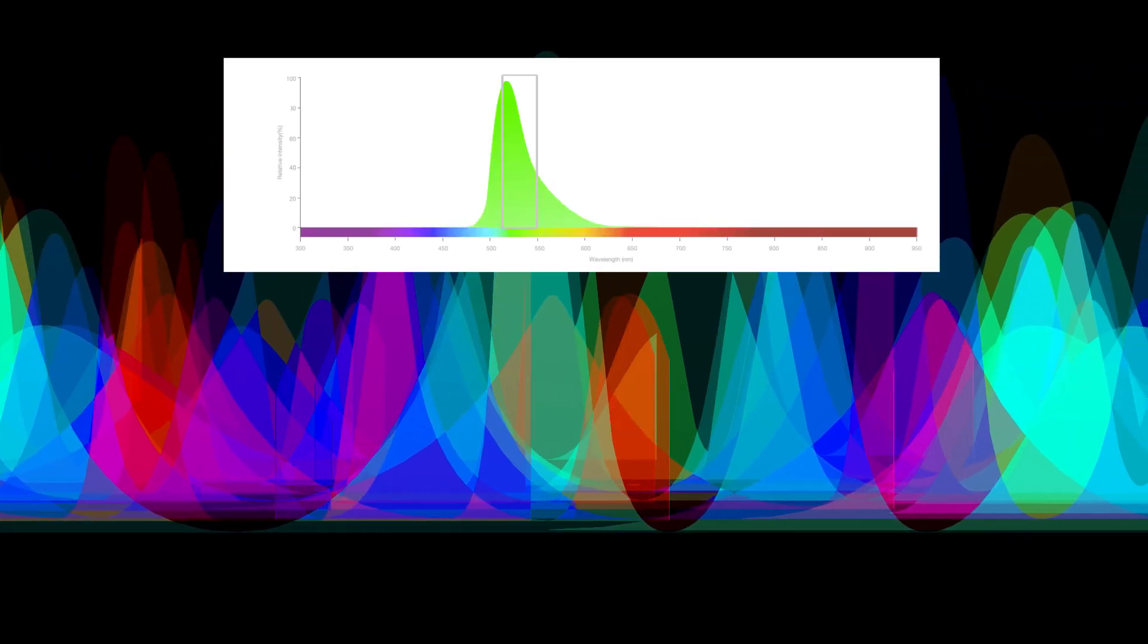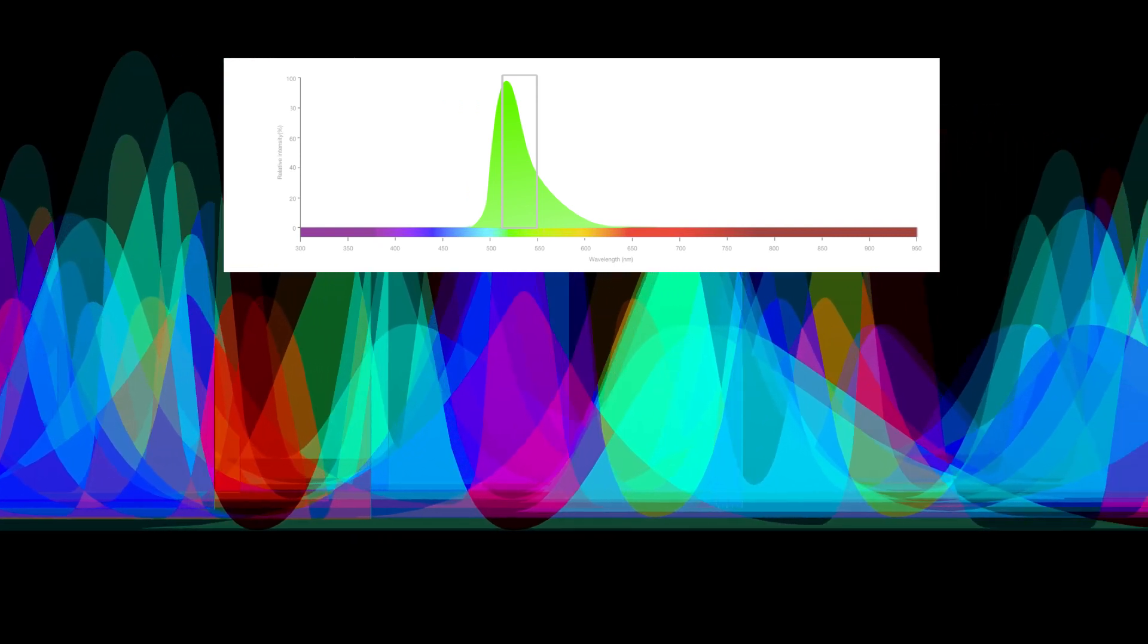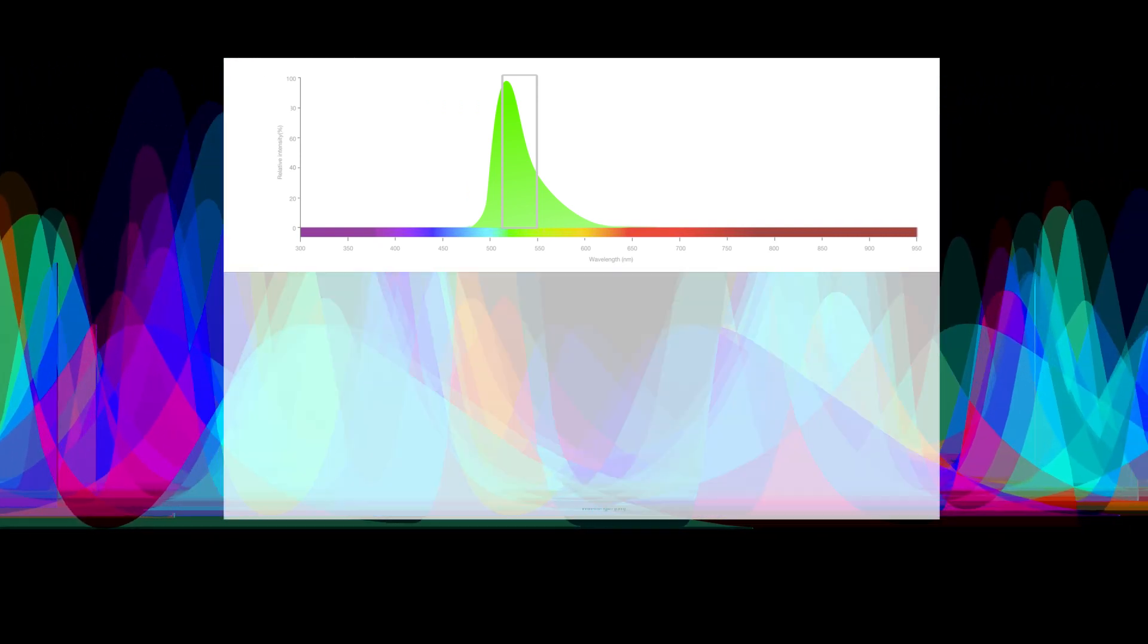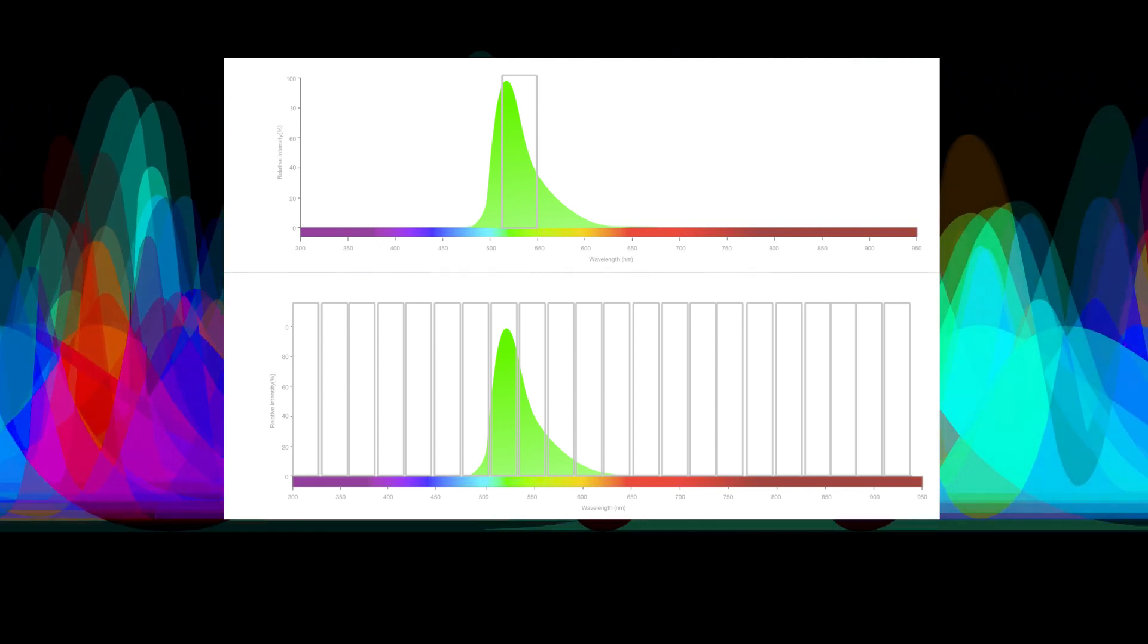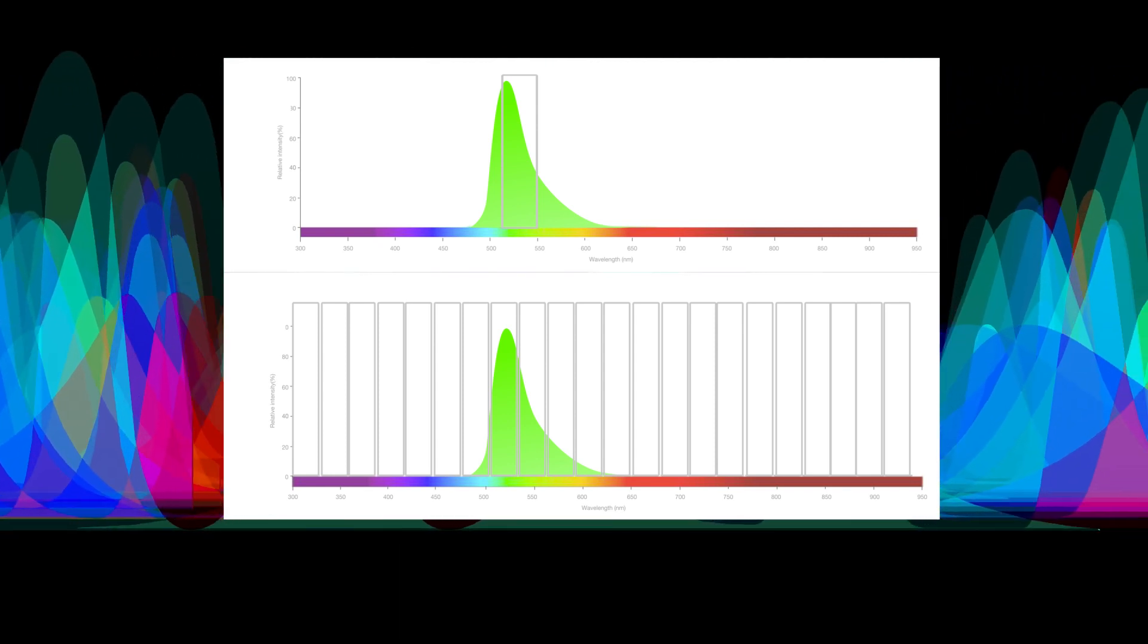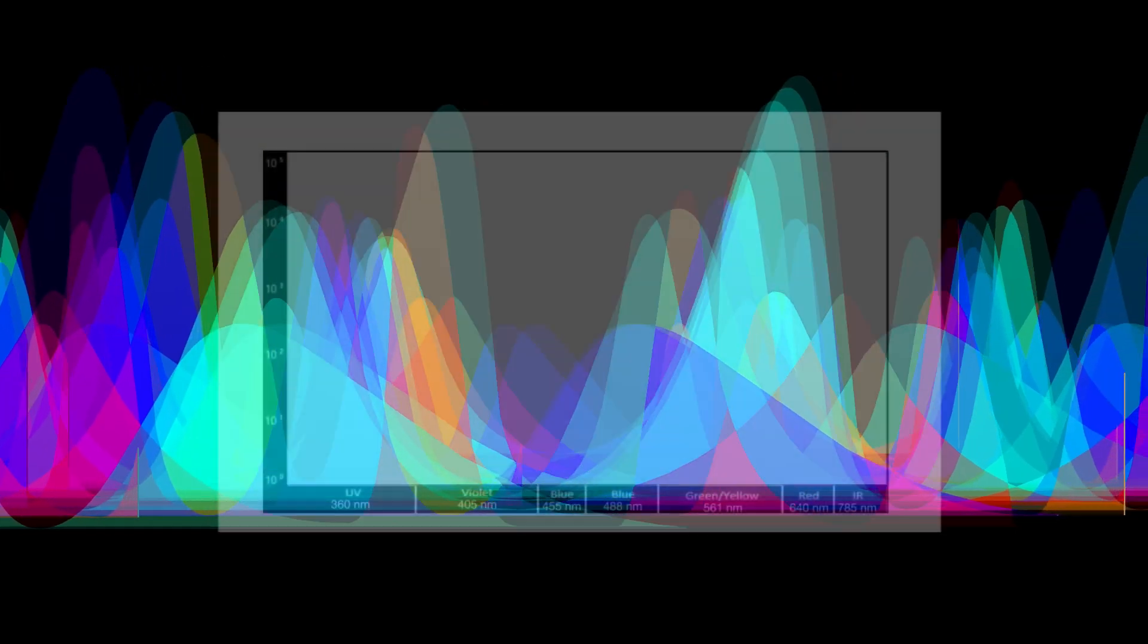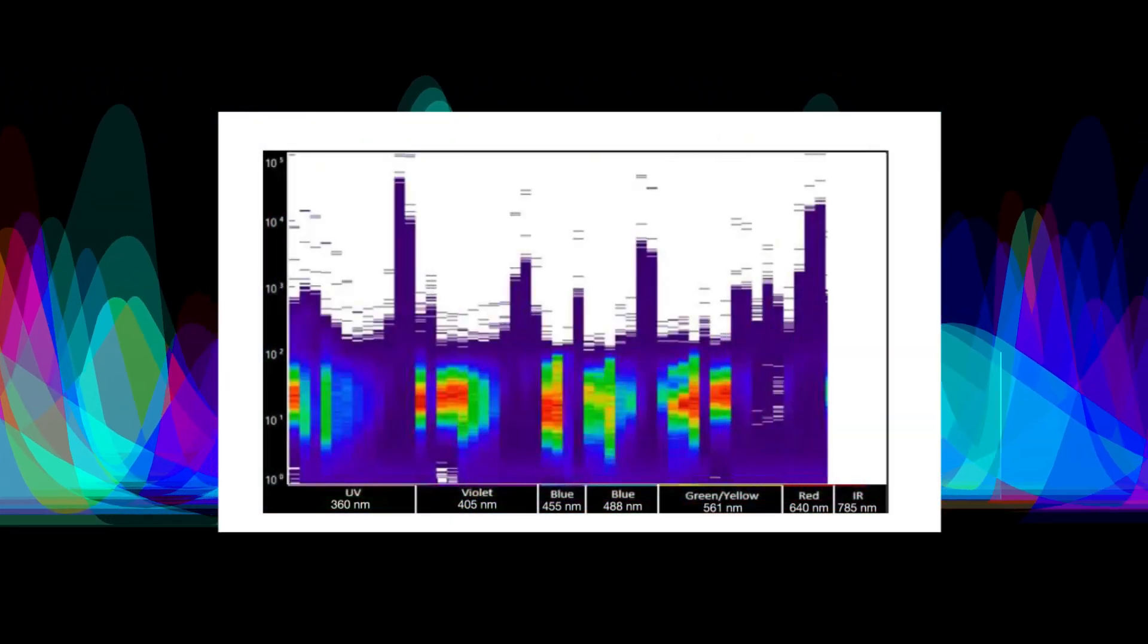Conventional flow cytometers collect emission from a single laser into individual detectors. Spectral flow cytometers measure the entire emission spectrum of each fluorochrome across all lasers. This creates unique signatures for each fluorochrome.